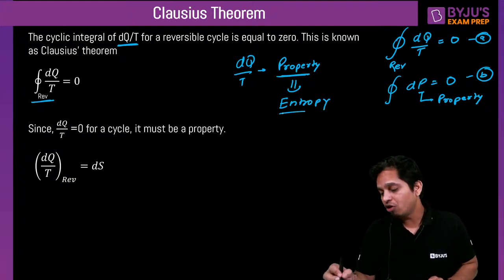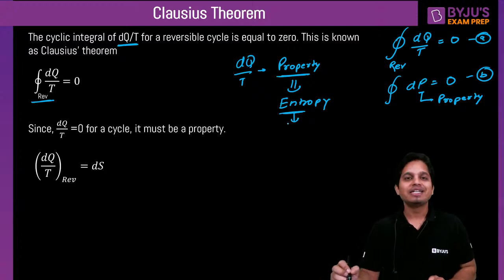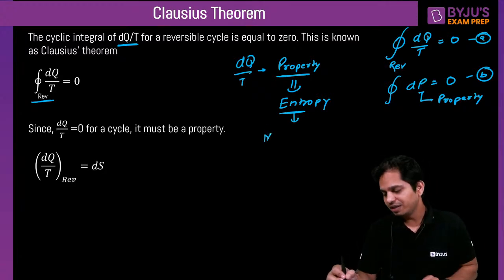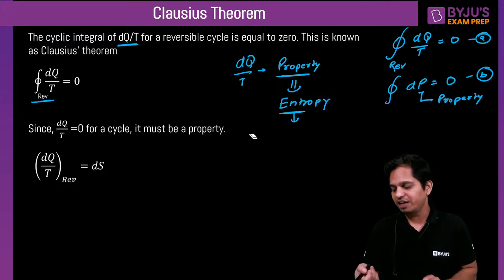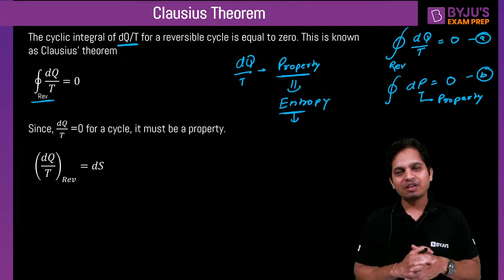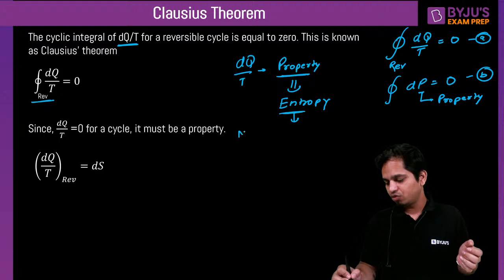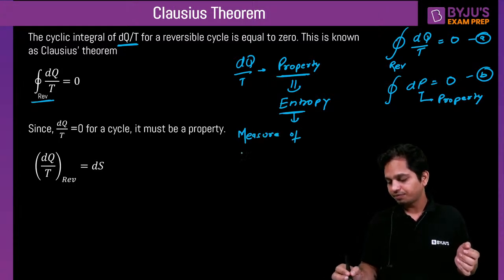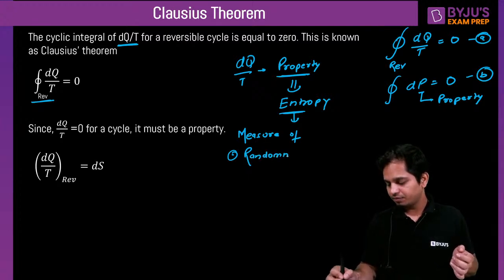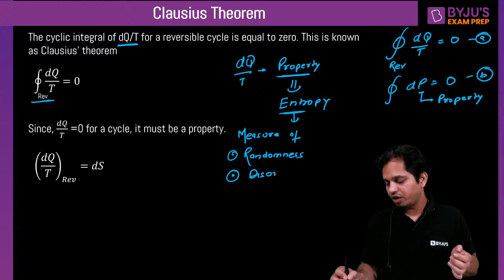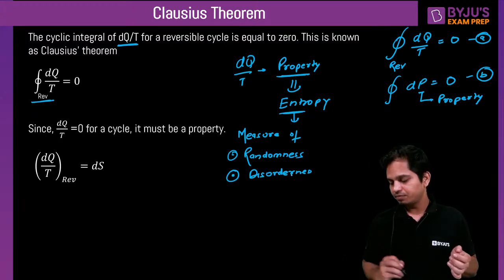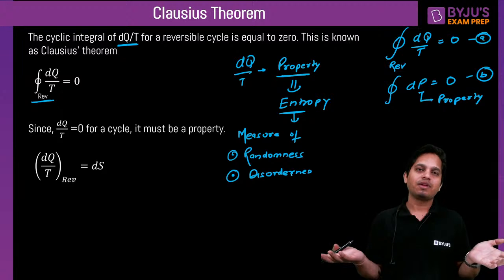Entropy is defined as the measure of randomness and disorderness of the system. In physical terms, it is the measure of disorderness. If you want to visualize entropy: whatever you do naturally, there is always some disorderness associated with it — disorderness always increases. This disorderness is called entropy.